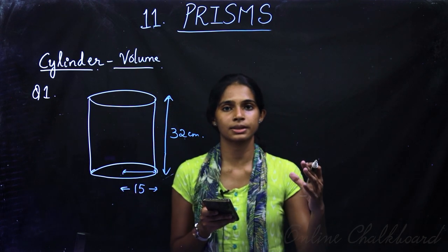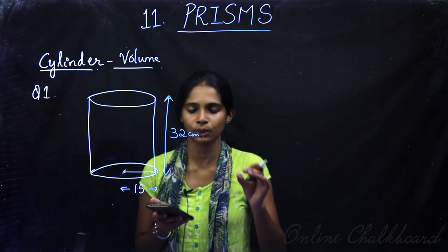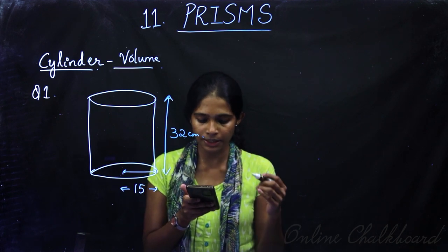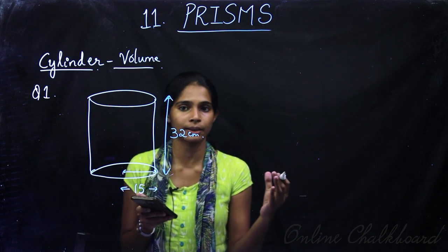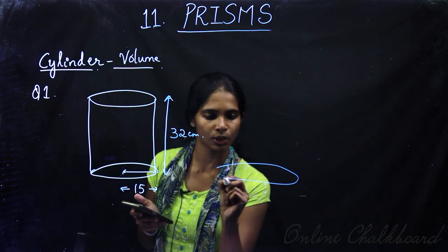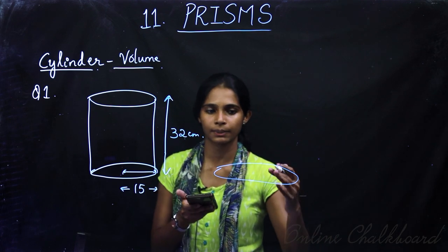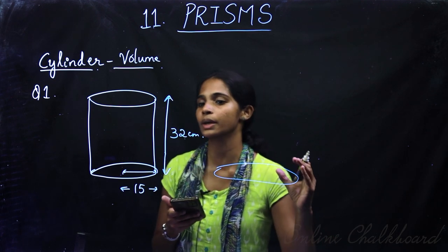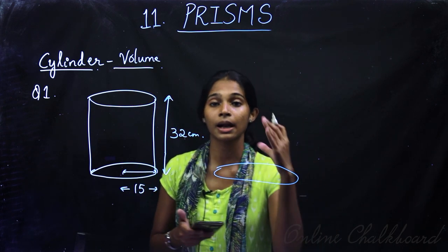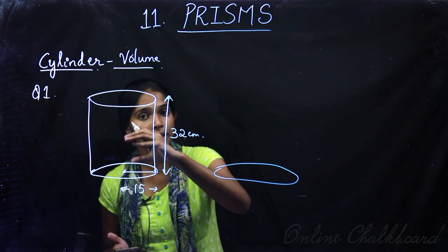So the iron cylinder is melted and recast. When we melt the iron cylinder and reshape it, the same quantity of iron is used. So the volume of both cylinders must be the same. We need to find the height of the new cylinder.